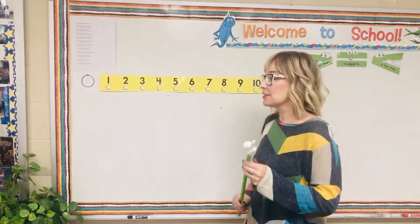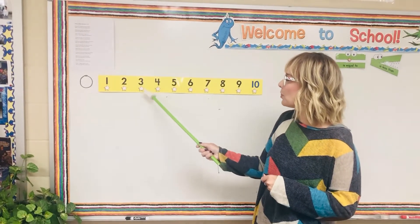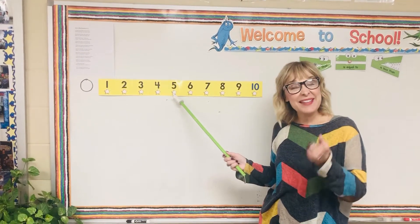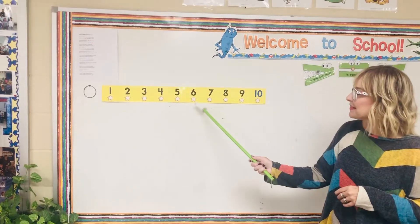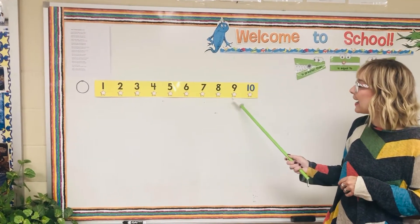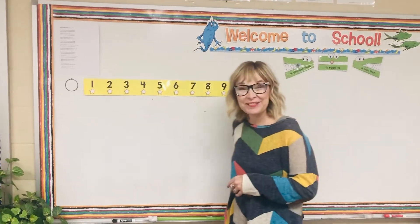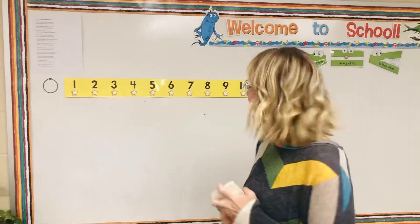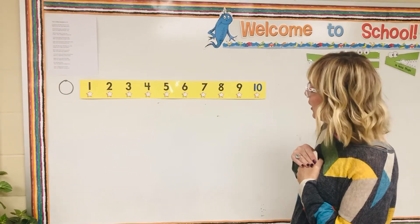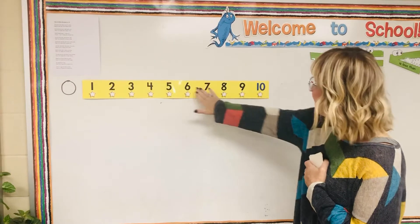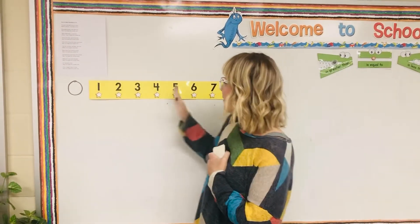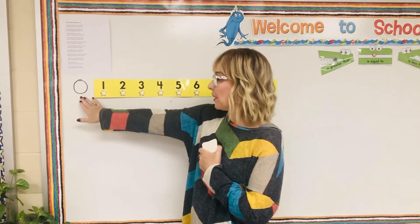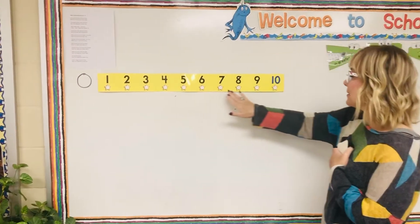We have already talked about numbers 0, 1, 2, 3, 4, and 5 and we've learned all about those numbers. Today we're going to learn about the second half of our number line, which includes numbers 6, 7, 8, 9, and 10. I want us to talk about the fact that 6 to 10 are greater than numbers 0 to 5. So as you go up the number line, the numbers get greater. Our smallest number is 0 on our number line and our greatest number is 10.